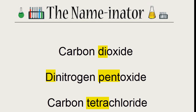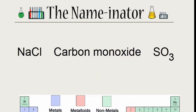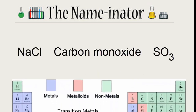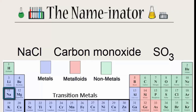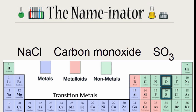Pause for a moment and identify the compounds below that are molecular. Since Na is a metal, that cannot be a molecular compound, which is made up of two nonmetals. Carbon monoxide has two nonmetals, and that 'mono' in monoxide gives us a good hint that it's molecular. And finally, SO3 — sulfur and oxygen are nonmetals, so SO3 is a molecular compound.